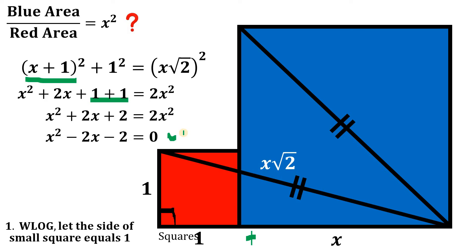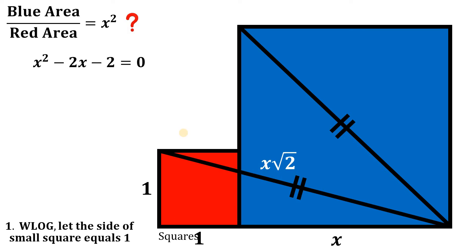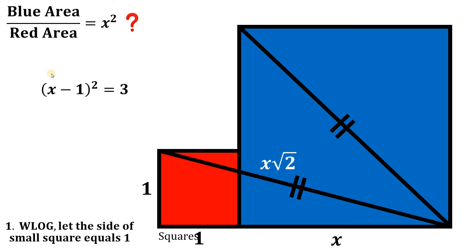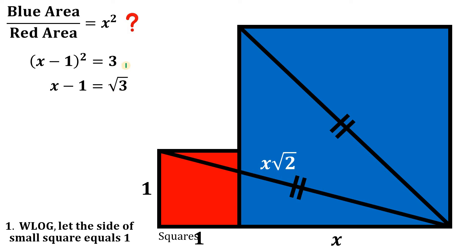Now let's focus on this result. We add three to both sides. The reason: negative two plus three gives positive one, and the left-hand side becomes a perfect square trinomial. We can factor it as (x minus one) squared equals three. Taking the square root of both sides, x minus one equals the positive square root of three — we ignore the negative root since x minus one must be positive. Adding one to both sides: x equals one plus square root of three.